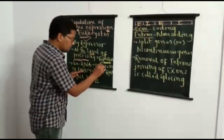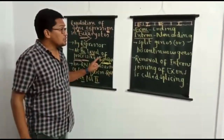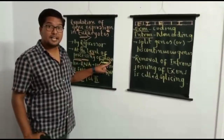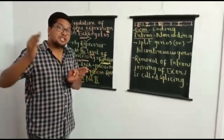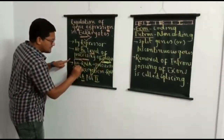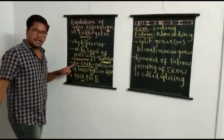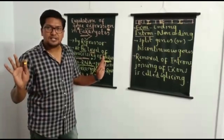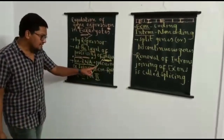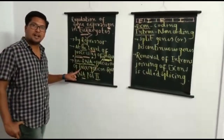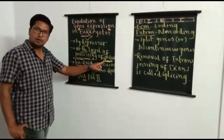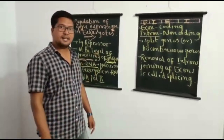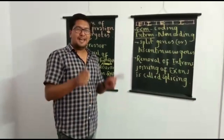Whenever we talk about protein synthesis in eukaryotes, the mRNA produced at the end of transcription is not directly the functional form. We call such mRNA hnRNA, where hn stands for heterogeneous nuclear RNA. hnRNA is the precursor of eukaryotic mRNA. Functional eukaryotic mRNA is formed from hnRNA.